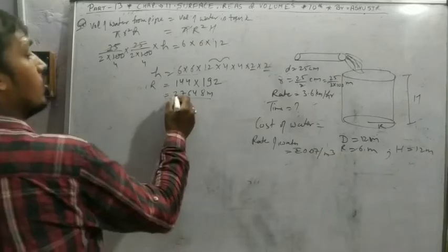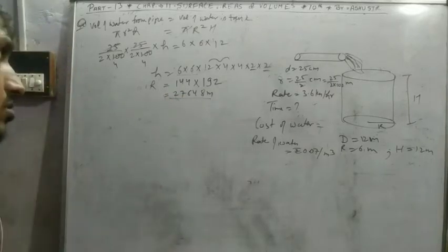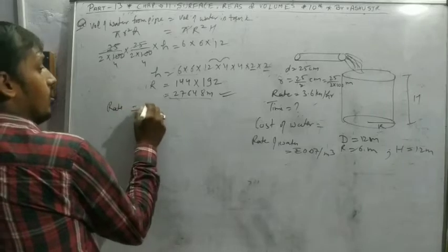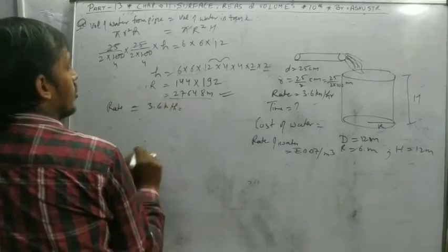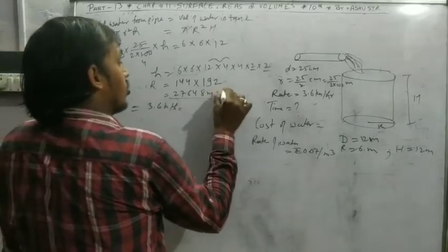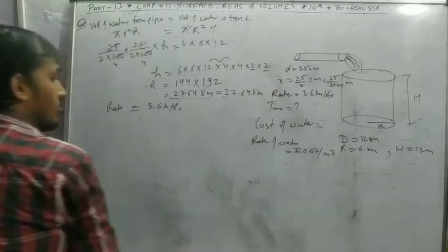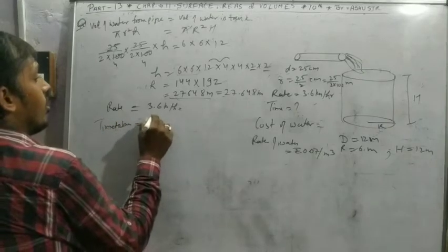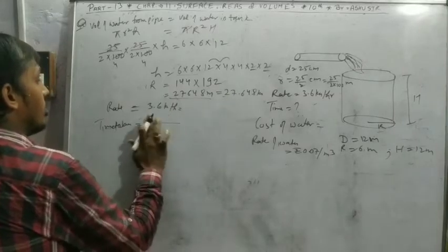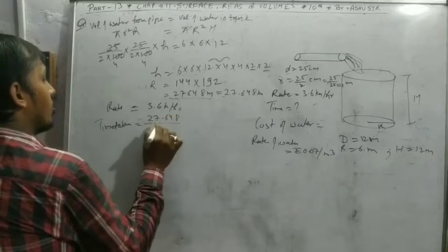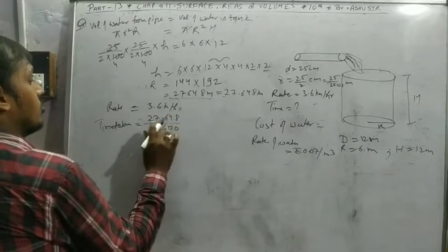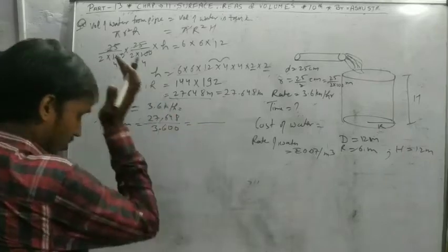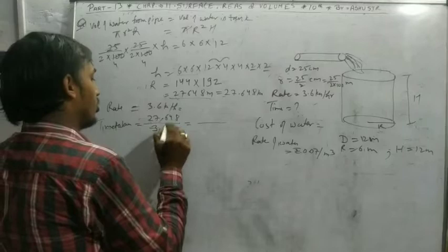So we get the value 27648 meters, that's the distance. And the rate is given, that is 3.6 kilometers per hour. So we can write 27.648 kilometers. Time taken equals distance upon speed.